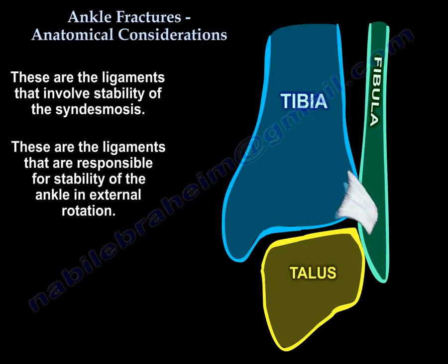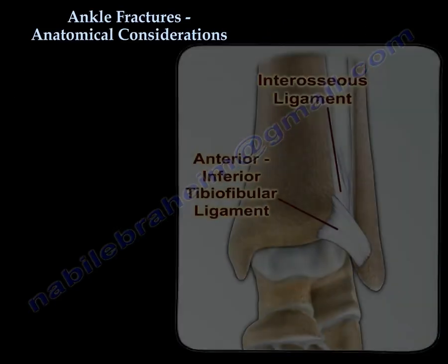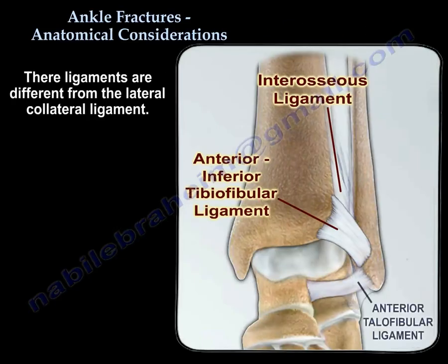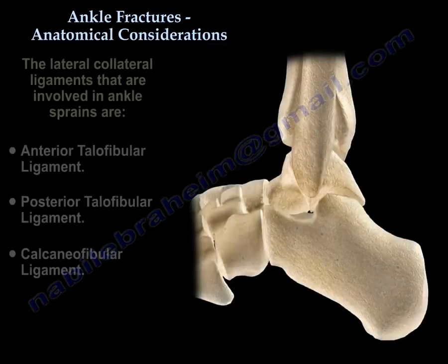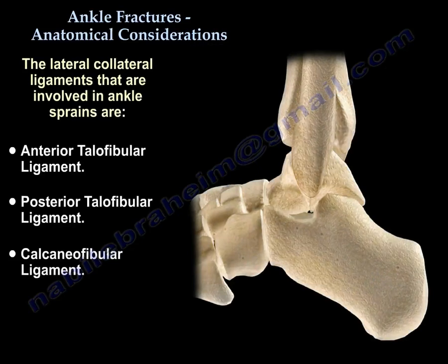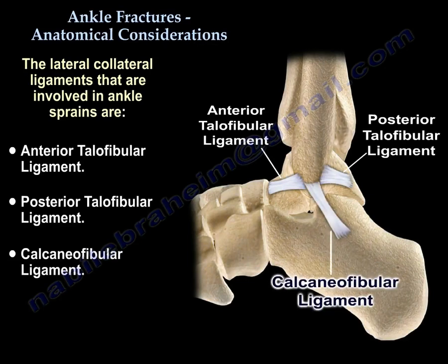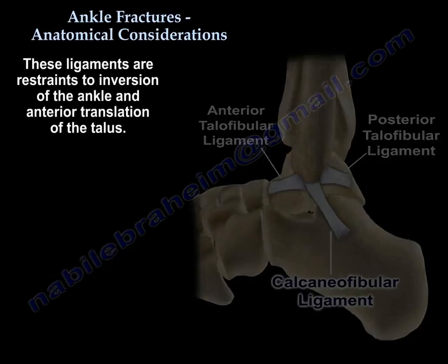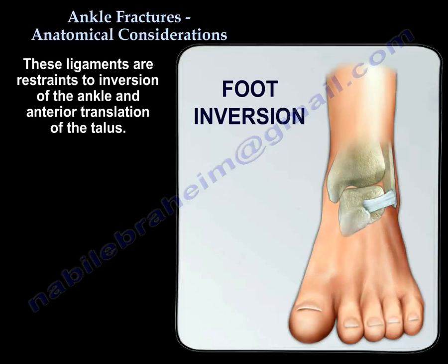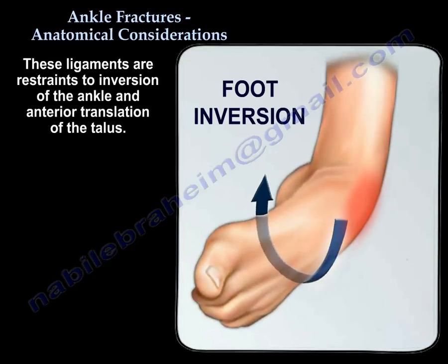These ligaments are responsible for stability of the ankle in external rotation. They are different from the lateral collateral ligament. The lateral collateral ligaments involved in ankle sprain are the anterior talofibular ligament, the posterior talofibular ligament, and the calcaneofibular ligament. These resist inversion of the ankle and anterior translation of the talus.